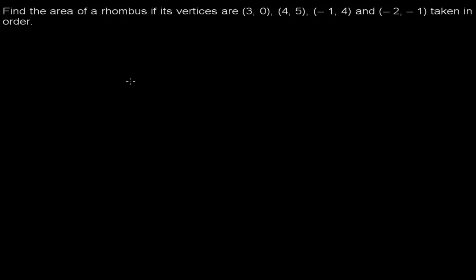In this video, I am going to discuss another question of coordinate geometry. The question says: find the area of the rhombus if its vertices are (3, 0), (4, 5), (-1, 4), and (-2, -1), taken in order. We need to find out the area of the rhombus.